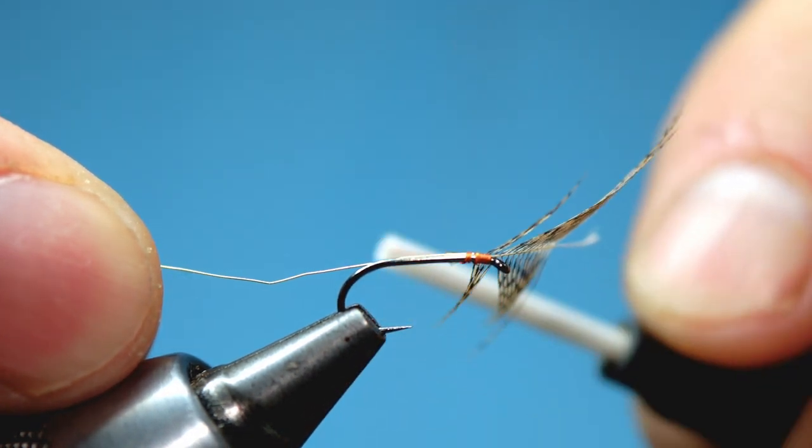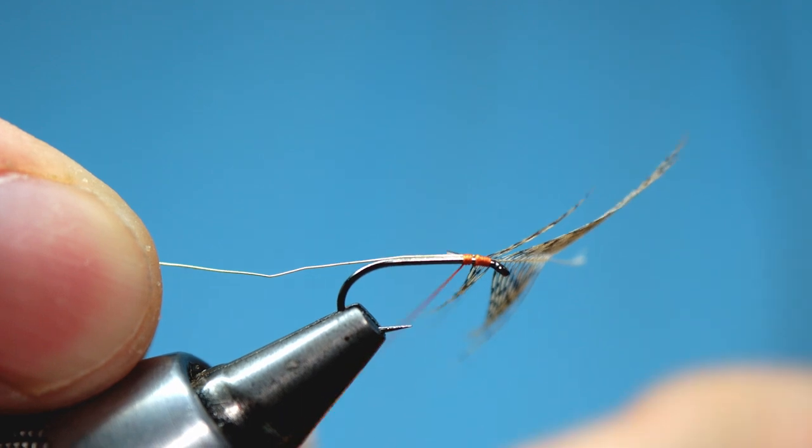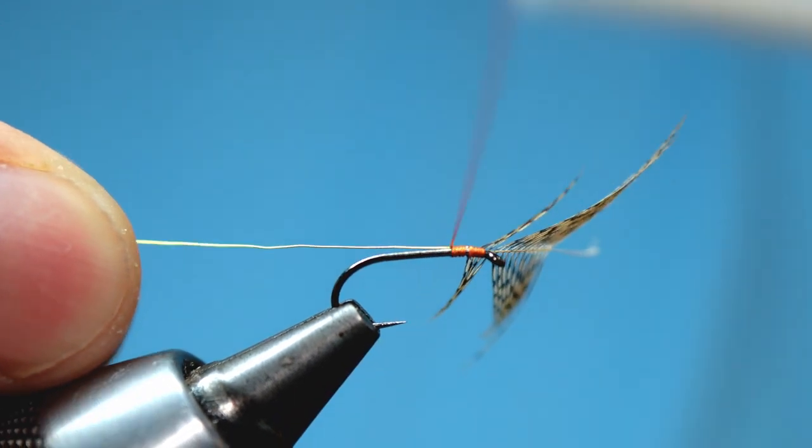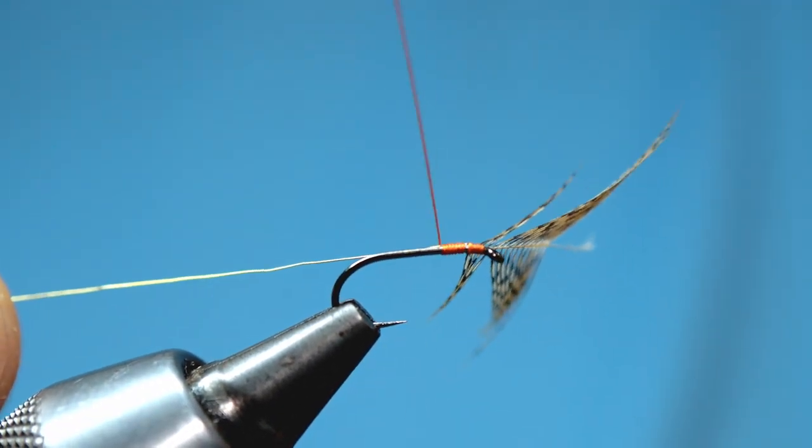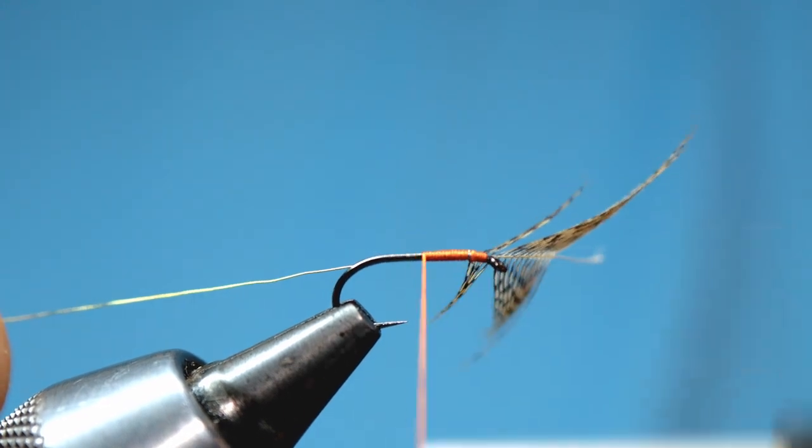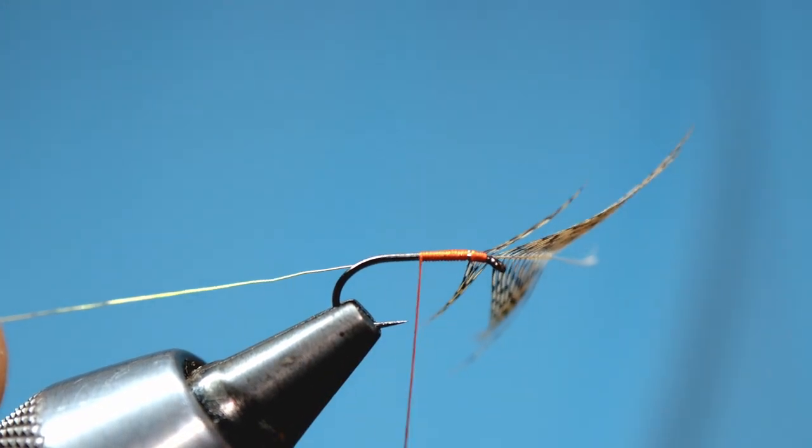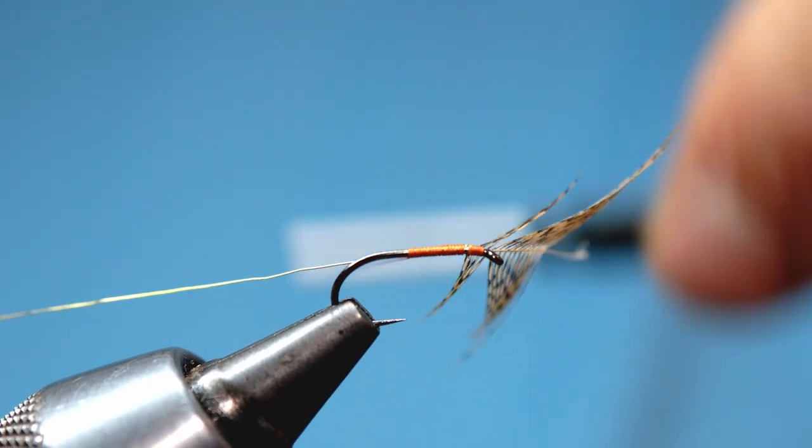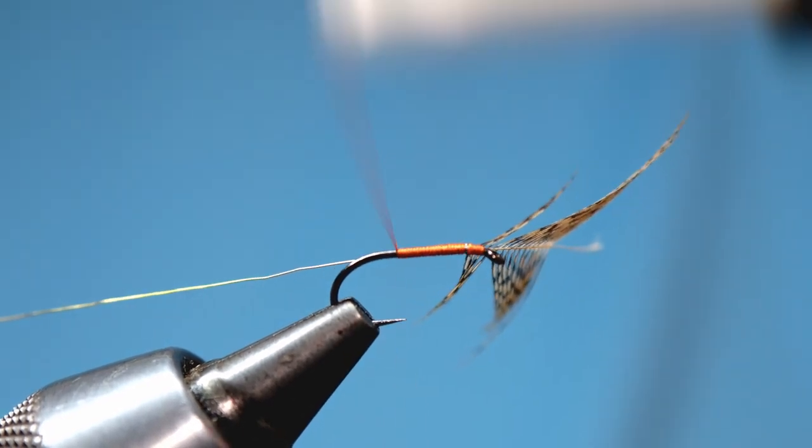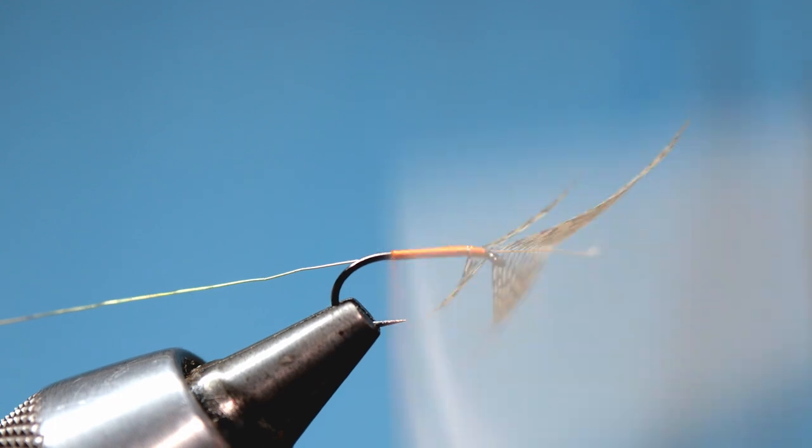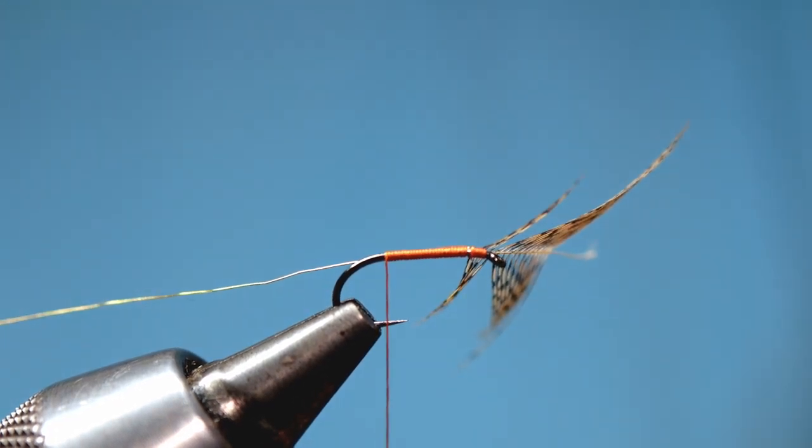Now taking our silk we come in tight touching turns down the hook shank to a point just short of where we mounted in the wire, to a point somewhere between the point of the hook and the end of the barb. Of course here I'm using a barbless hook so it's the back of the eye.